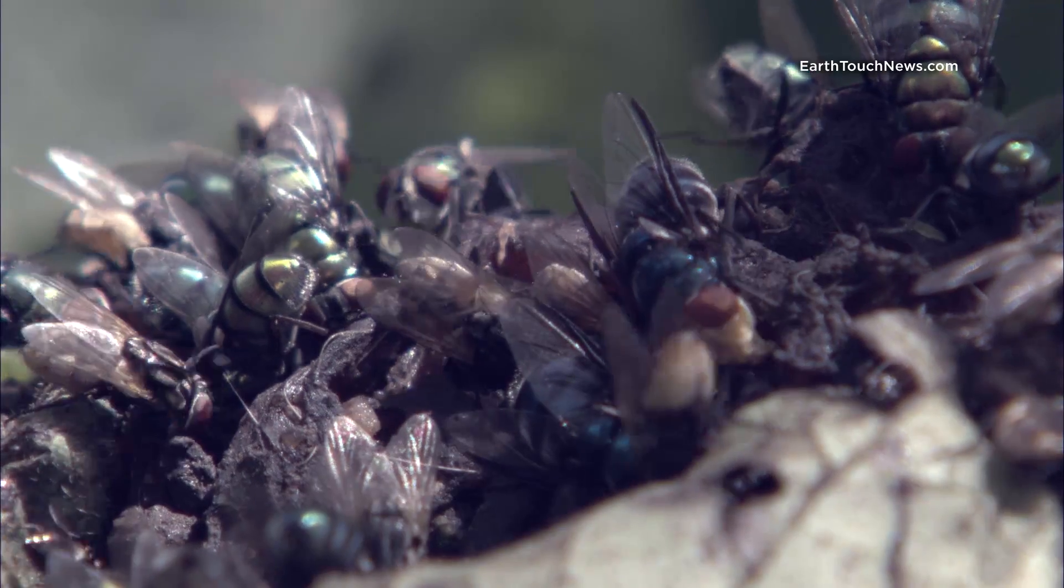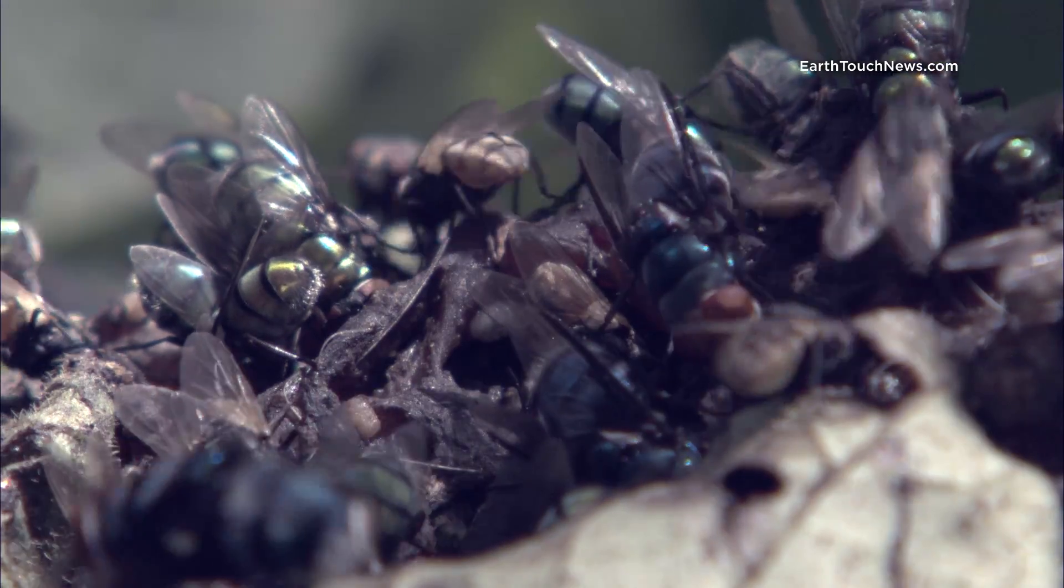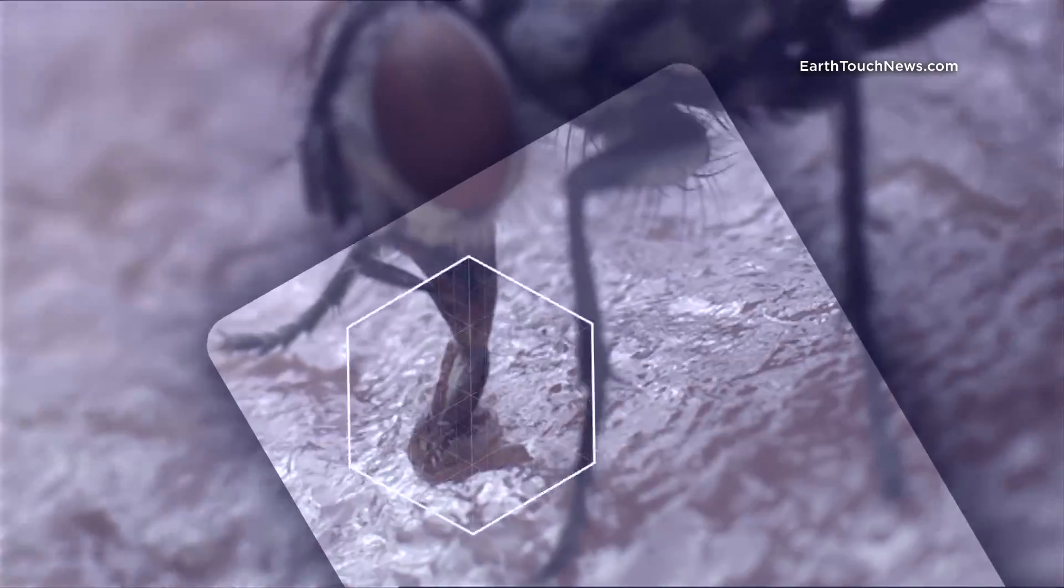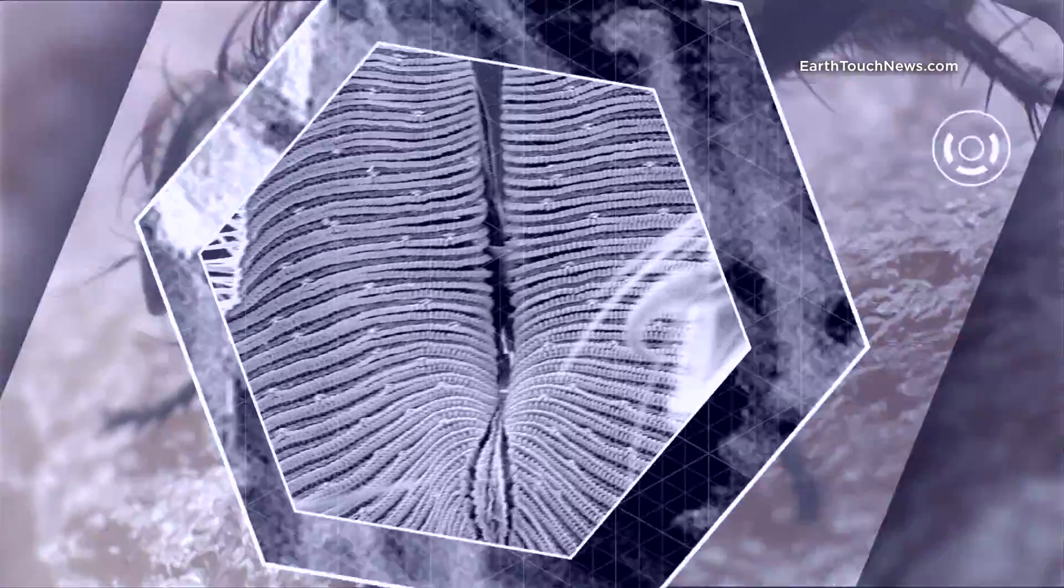It's time to tuck in. Flies have no teeth to chew flesh, but they do have this organ: a proboscis. It's like a dual purpose straw with sponge-like pads at the bottom for lapping.